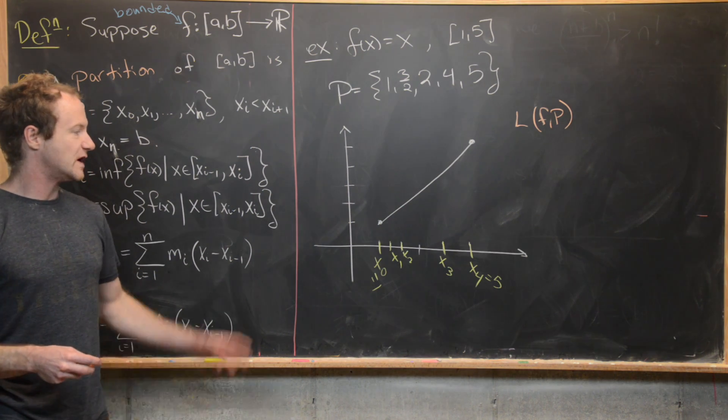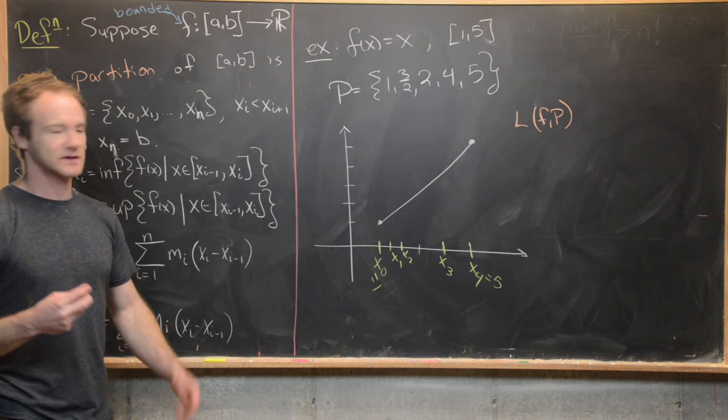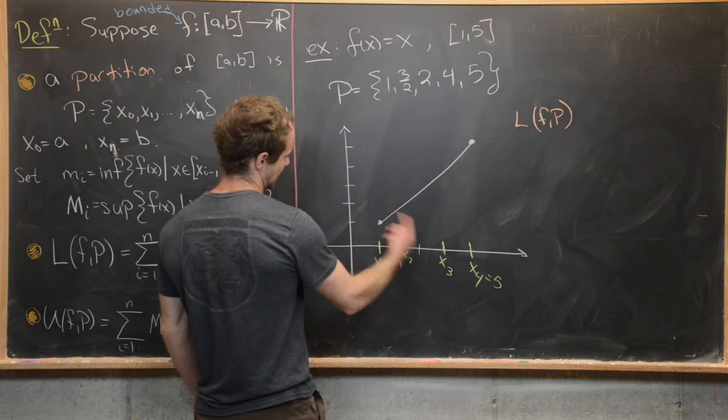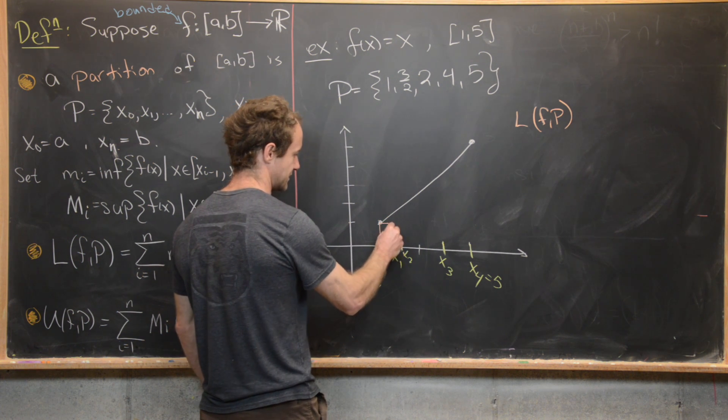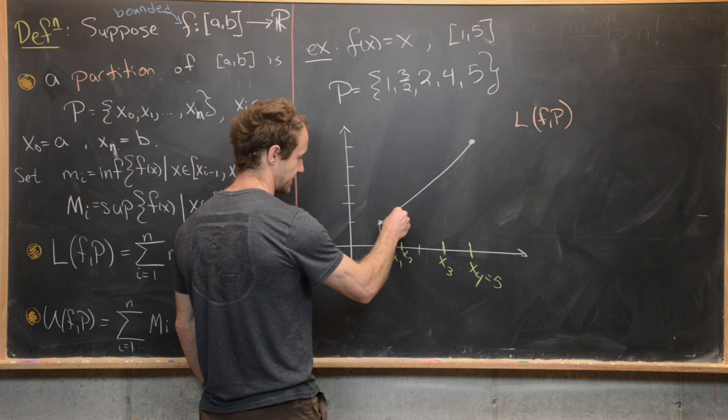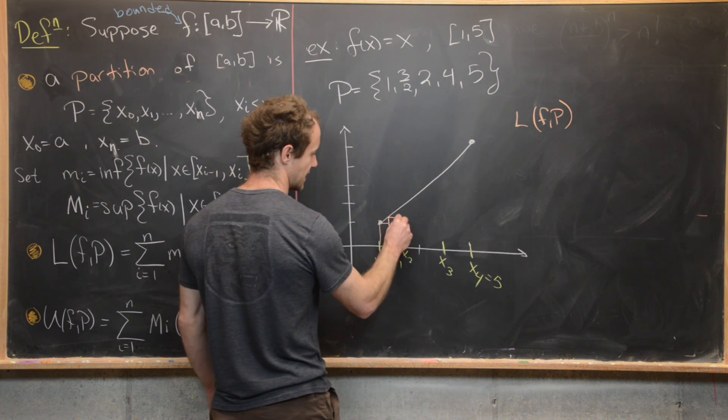But lucky for us, we know that this function is increasing and it's really easy to find the values. And in fact, this is just going to give us the left-hand endpoint approximation for the area under the curve. So we've got some sort of picture like this.